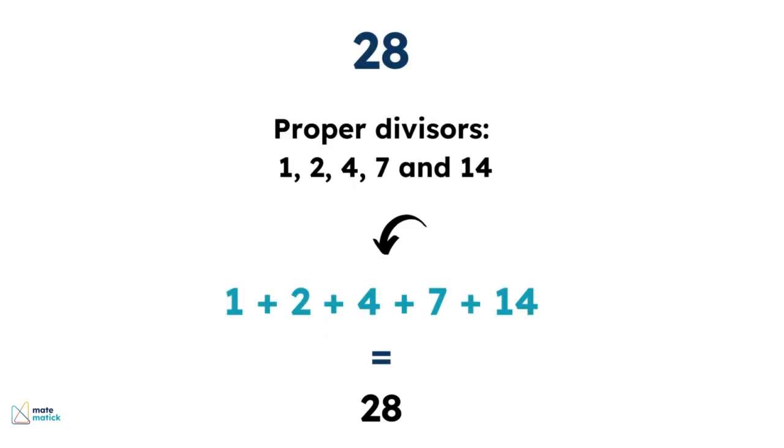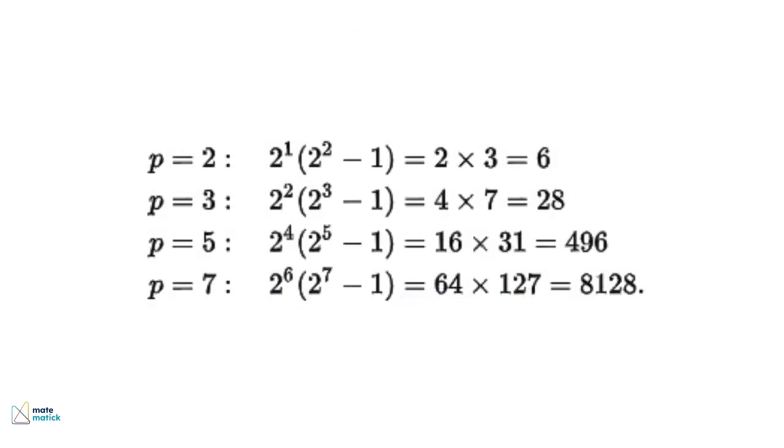The next perfect number after 6 is 28. Its proper divisors are 1, 2, 4, 7, and 14. Adding them together gives 28 itself. Following Euclid's formula, other examples of perfect numbers include 496 and 8128. Each of these numbers is the sum of its proper divisors.